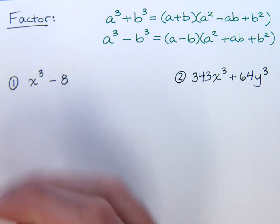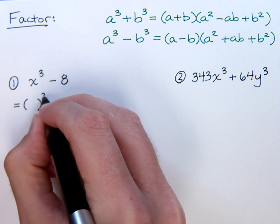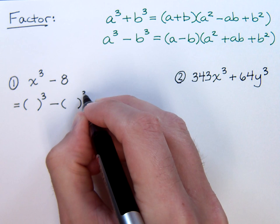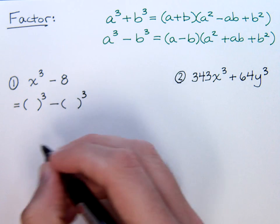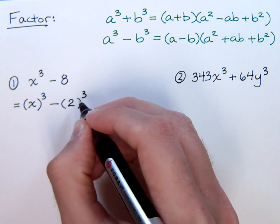If we look at problem number one, we see that this can be written as something to the third minus something else to the third, because both of these are cubes.